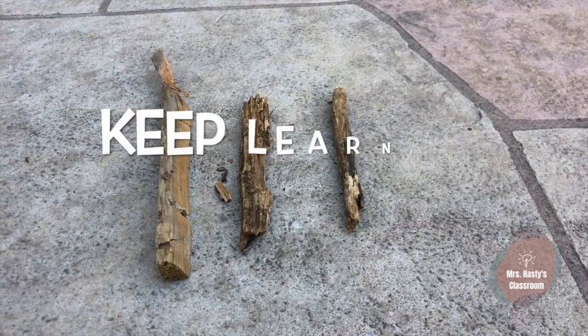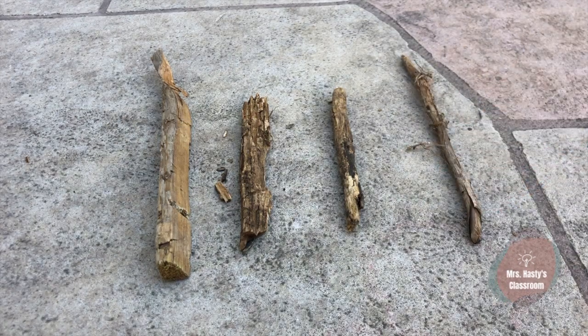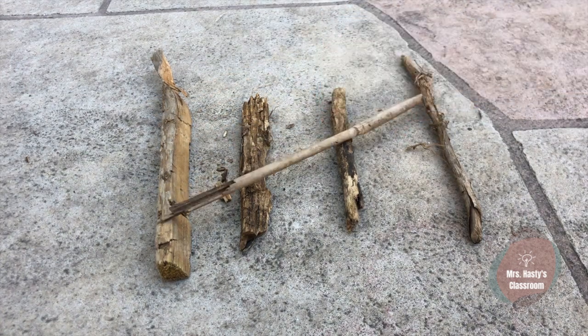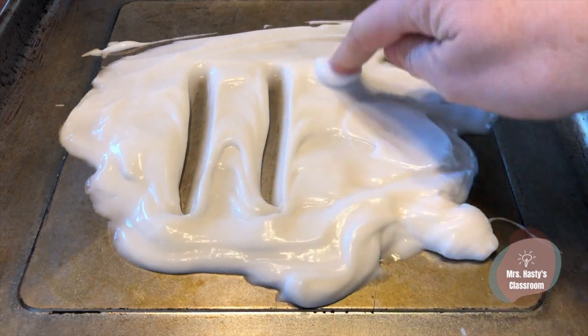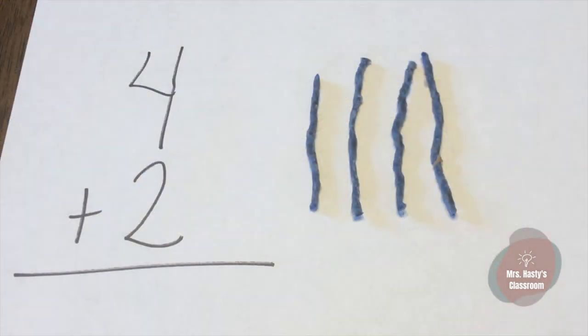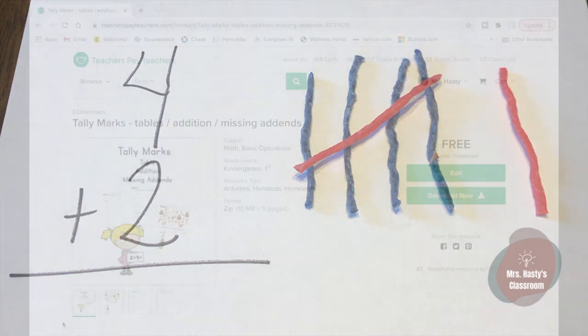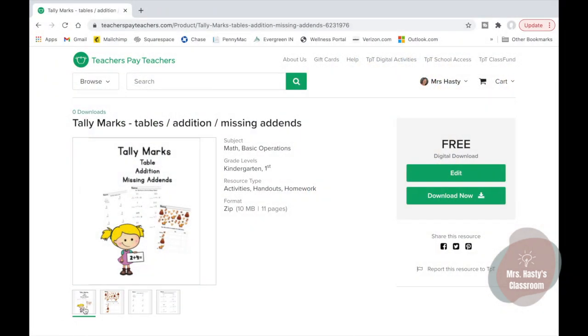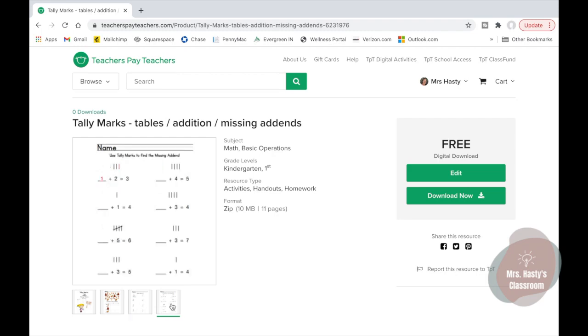Keep learning at home by using sticks to make tally marks. Play with your food by making tally marks in pudding or yogurt. Two colors of wiki sticks are great for making tally marks when doing your math. And there's always printable resources available at my teacher's store at TeachersPayTeachers.com.